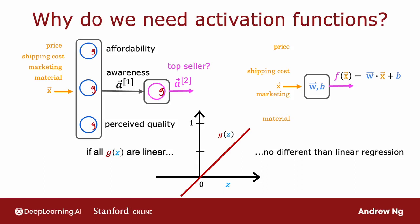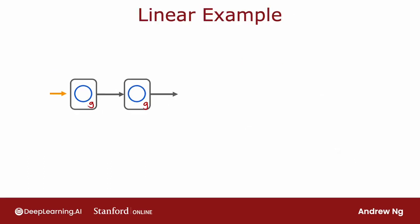Let's illustrate this with a simpler example. Let's look at a neural network where the input x is just a number and we have one hidden unit with parameters w1 and b1 that outputs a1, which is here just a number.